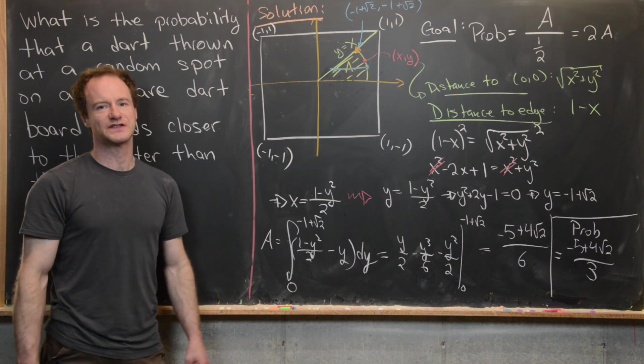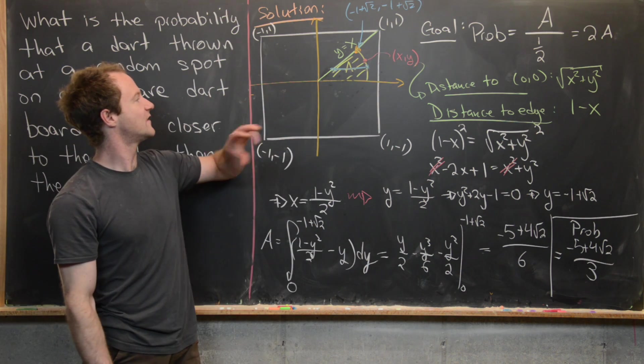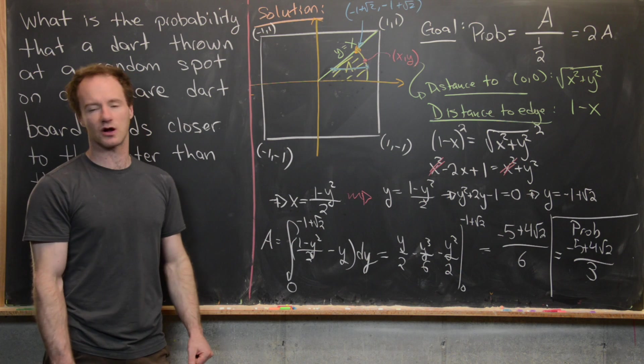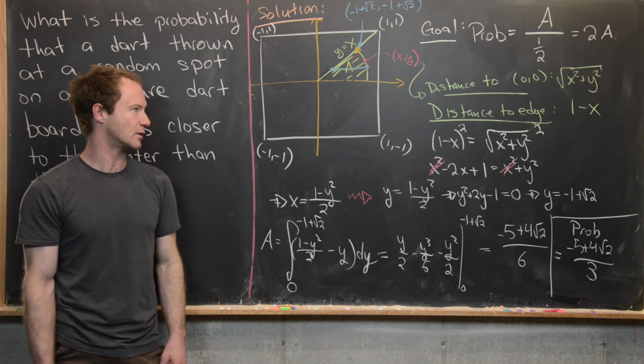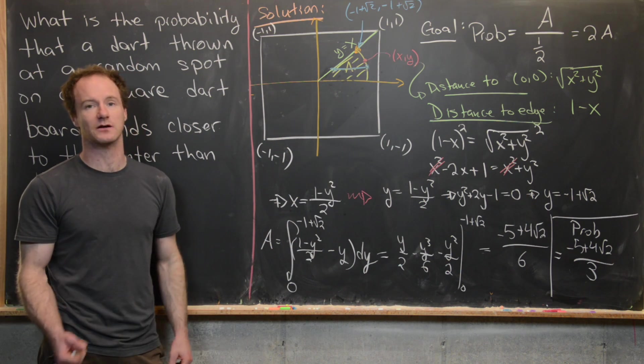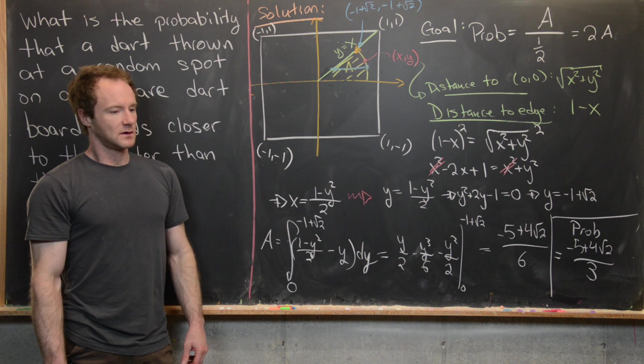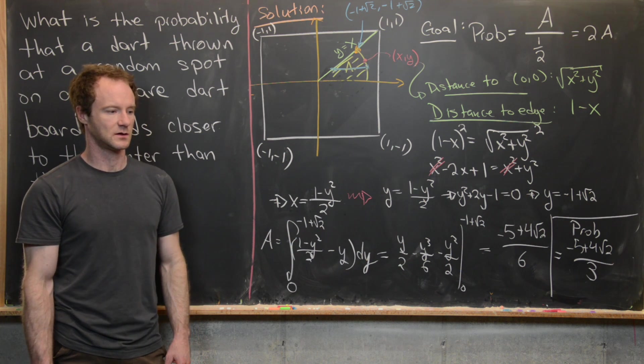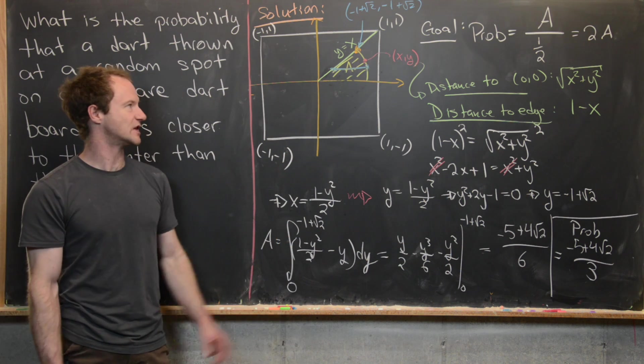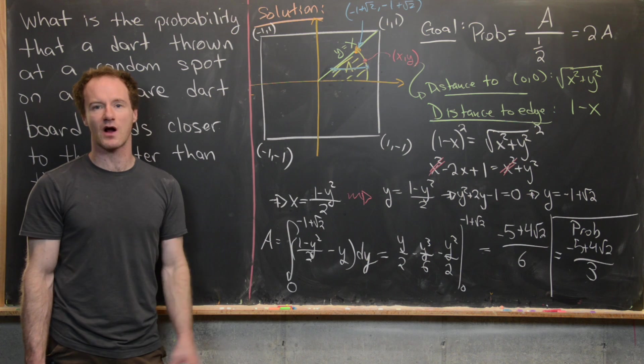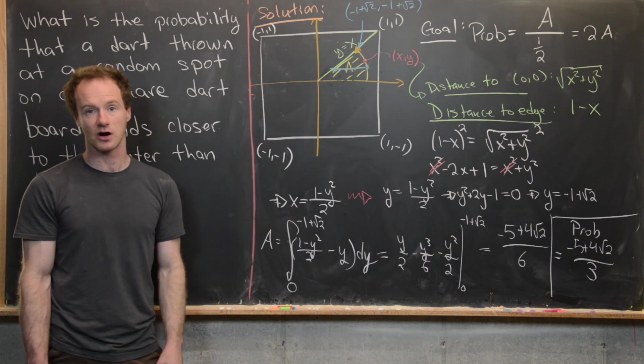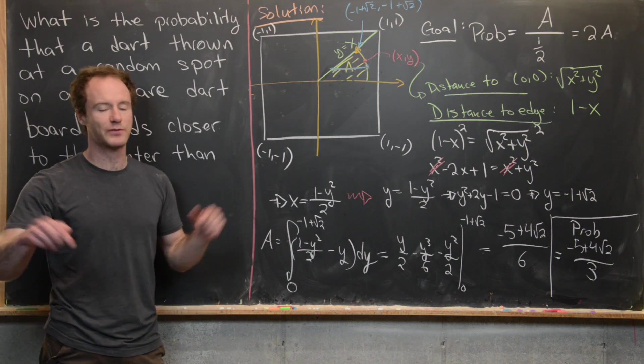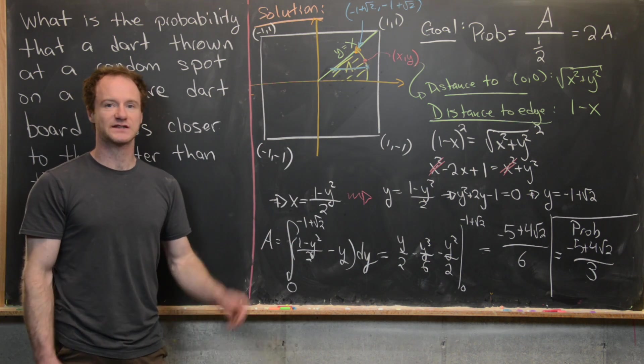So now maybe some follow-up questions that we could do here is what if you had a hexagonal chalkboard? I think maybe that's also an interesting one to look at, or maybe an octagonal. So maybe a nice follow-up question would be, can we solve the same problem where we have a hexagonal dartboard? So maybe try it out and post in the comments what you get. And that's a good place to stop.